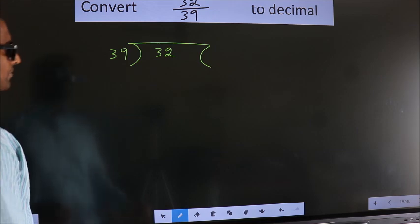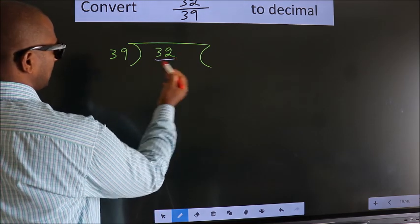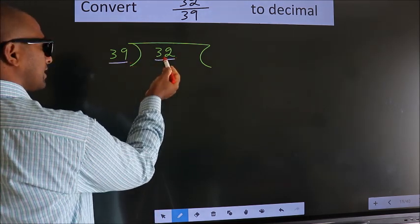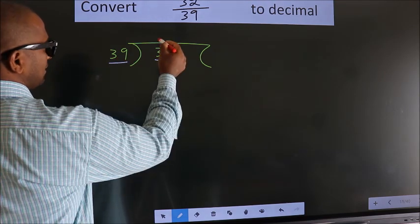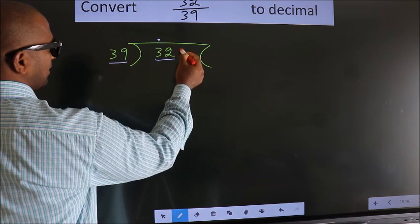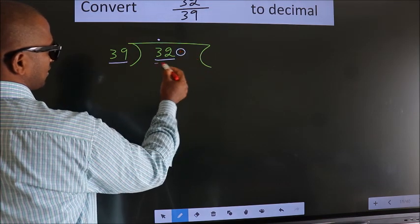Next. Here we have 32. Here 39. 32 is smaller than 39, so we should put a dot here and take 0 here. So 320.